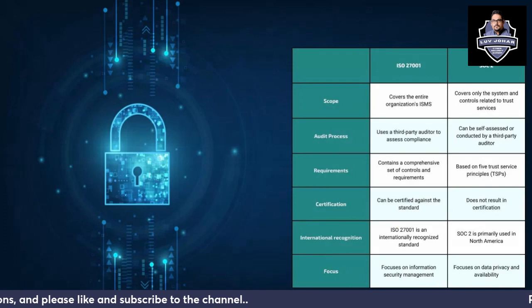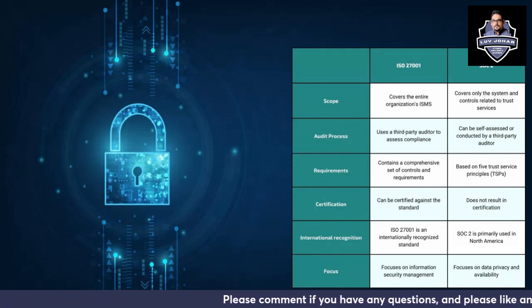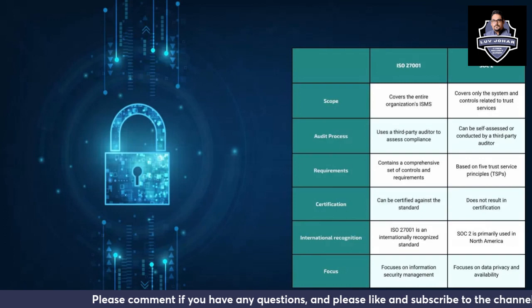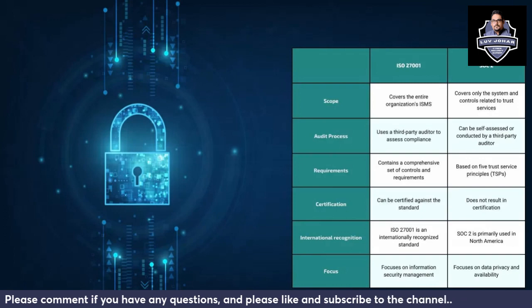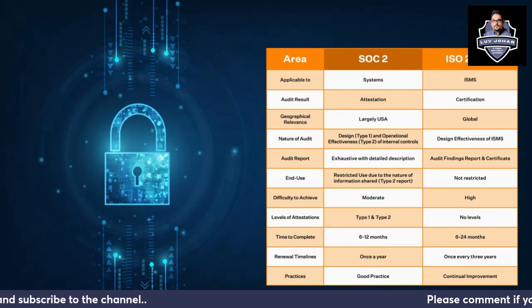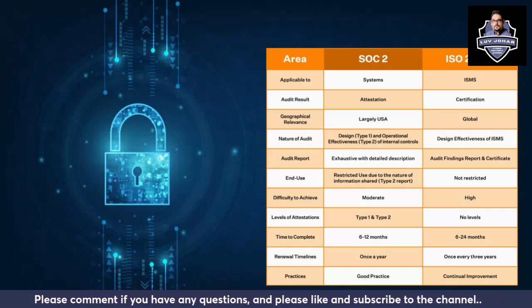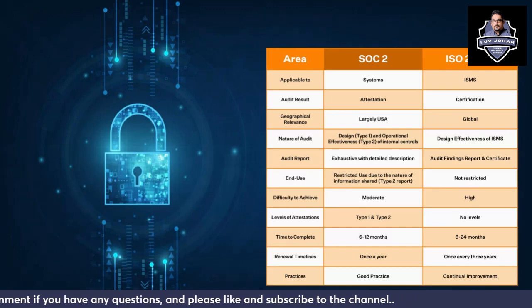The focus for ISO 27001 is on information security management, because you are trying to follow an Information Security Management System. For SOC 2, the focus is on data privacy and availability of data. SOC 2 is applicable to systems; ISO 27001 is applicable to the ISMS. The audit result is attestation for SOC 2 versus certification for ISO 27001.